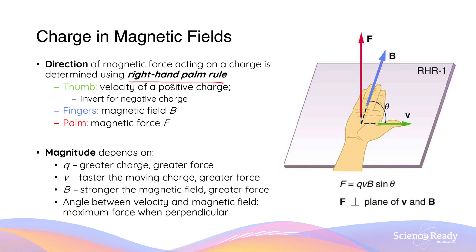The right-hand-palm rule is something we can use to determine the direction of a magnetic force for a charged particle. The thumb will be pointing in the same direction as the velocity of a positive charge. So if a positive charged particle is travelling towards the right, your thumb will be pointing towards the right. For negative charges, you need to invert your thumb, meaning your thumb should point in the opposite direction to the negative charged particle's velocity. So if a negative charged particle is travelling towards the right, you point your thumb towards the left. It is very important to determine whether the charged particle is positive or negative before using the right-hand-palm rule.